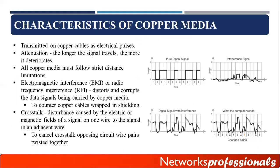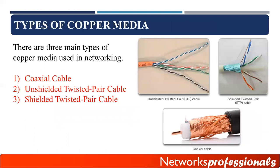The more twists a pair has, the better it is; fewer twists means it can be affected by crosstalk. There are three main types of copper media used in networks: coaxial cable, UTP (Unshielded Twisted Pair), and STP (Shielded Twisted Pair).